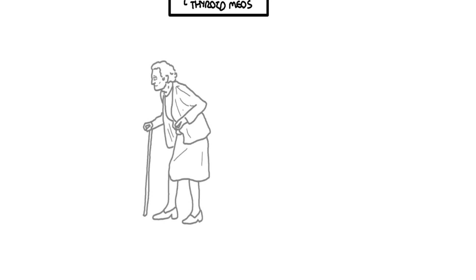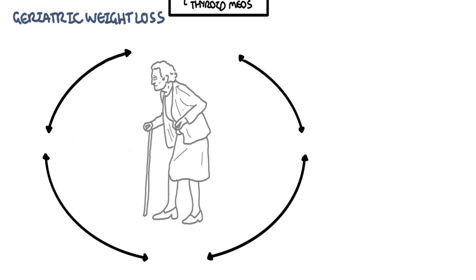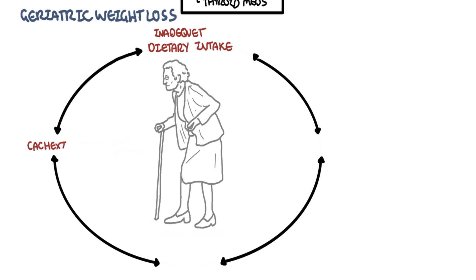When talking about unintentional weight loss, it is important to consider it from a geriatrics perspective. This is usually a multifactorial process and includes inadequate dietary intake, cachexia, anorexia, and sarcopenia — all of which are interconnected and play a role in weight loss in an older person.